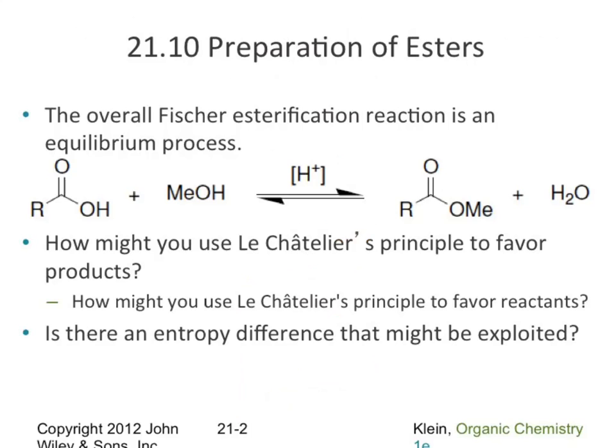Remember your equilibrium constants — capital K equals the concentration of products over the concentration of reactants. The bigger your K value, the more products are favored; the smaller, the more reactants are favored. Ester reactions typically have K values of four to five, maybe as large as ten. That is relatively small — it does favor ester formation, but very, very minutely.